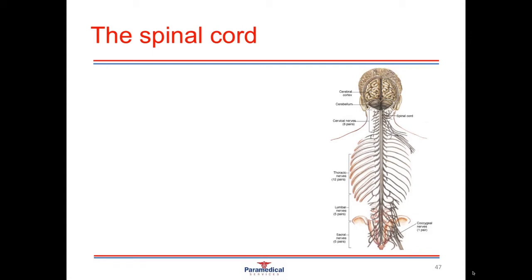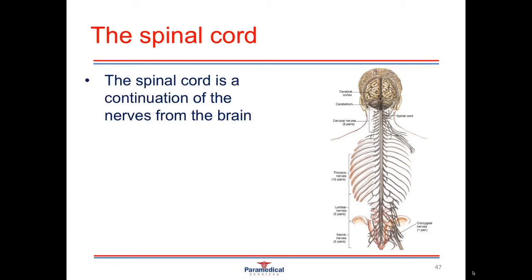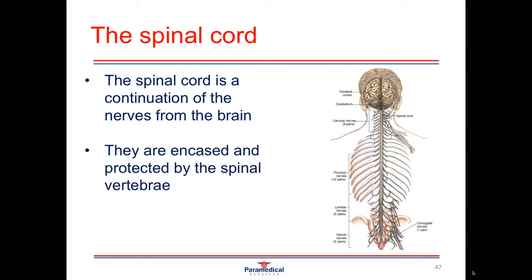Moving on down to the spinal cord — the spinal cord is continuous with the brain, and a continuation of all the nerves of the brain moves down the spinal cord. The spinal cord is encased and protected by the bones of our spine, or spinal vertebrae. It's responsible for transmitting information from the peripheral nerves up to the brain and vice versa, and it also has the capability for a reflex arc.